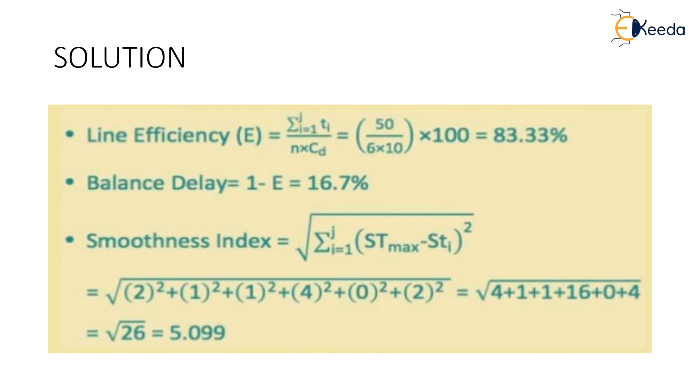Hence, by utilizing the formula of line efficiency we get the efficiency to be 83.3%, balance delay to be 1 minus the efficiency which is 16.7%, and the smoothness index which is sum of ST max minus ST i whole square which when we find it out the value will become 5.09. Thank you.